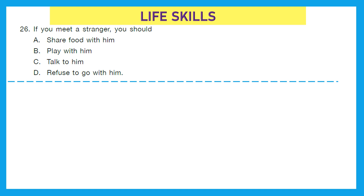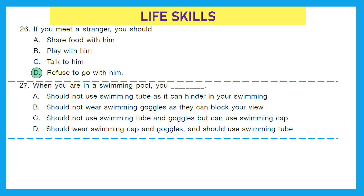Let's move to the next section, that is life skills. Question 26: If you meet a stranger, you should share food with him, play with him, talk to him, or refuse to go with him? The right answer is option D, refuse to go with him — stranger danger. Question 27: When you are in a swimming pool, you should wear a swimming cap and goggles and use a swimming tube. Option D is the right answer.